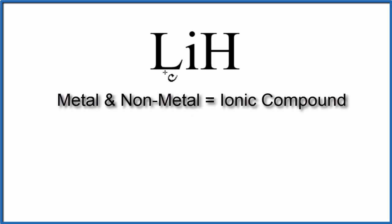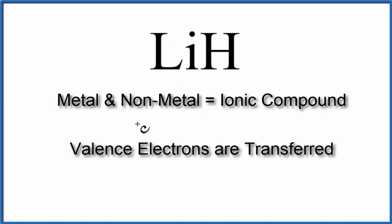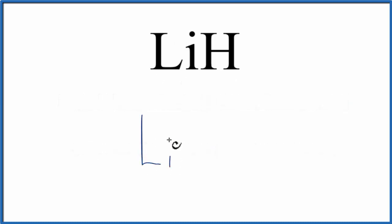And in ionic compounds, valence electrons are transferred from the metal to the non-metal. So we write Li and then H. Lithium, that's in group 1 on the periodic table, and it has one valence electron. Hydrogen is also in group 1. It has one valence electron as well.